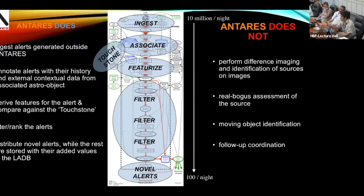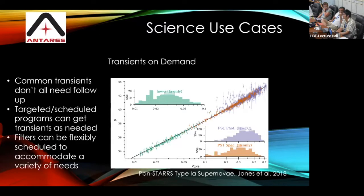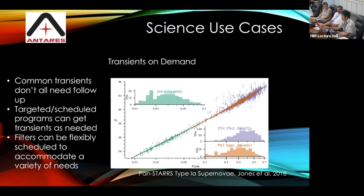We don't have LSST yet, but we have the Zwicky Transient Facility, and we are building this kind of system now. These brokers must be science-oriented. For example, if you are doing supernova cosmology and have telescope time in classical mode, you don't want alerts every night — you want alerts on the nights you are observing. You can go into our system and say 'I'm going to observe tomorrow — give me fresh alerts from the past nights.' This is called filtering on demand.